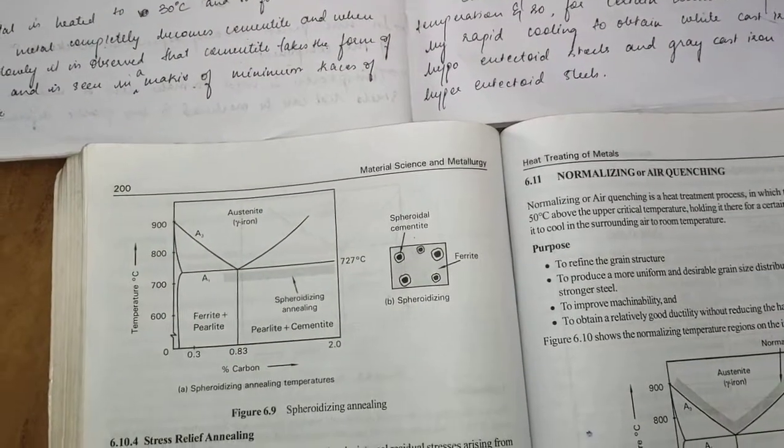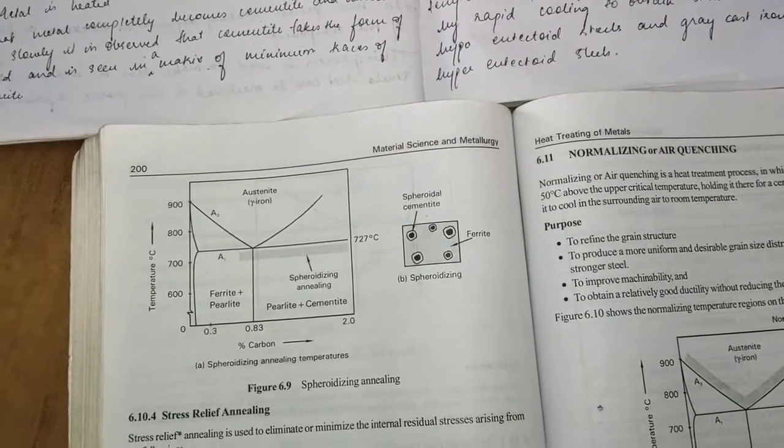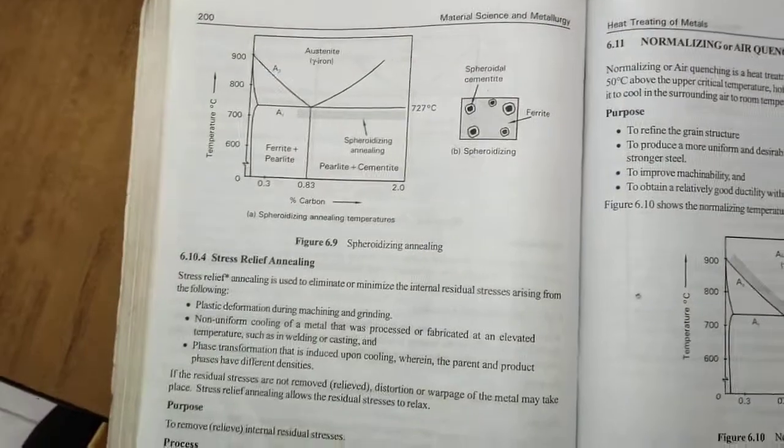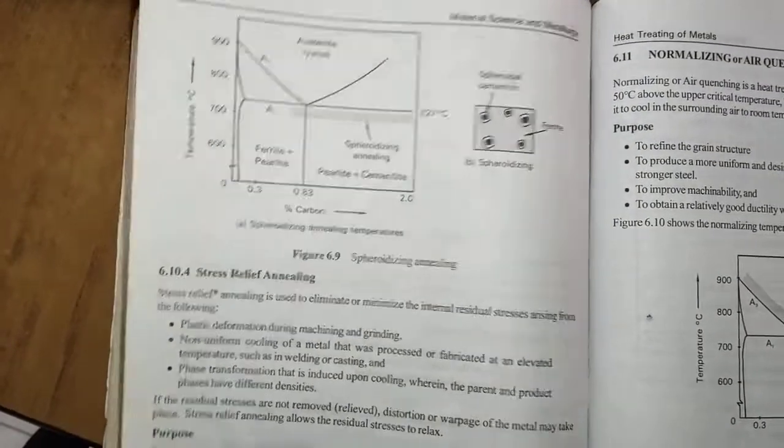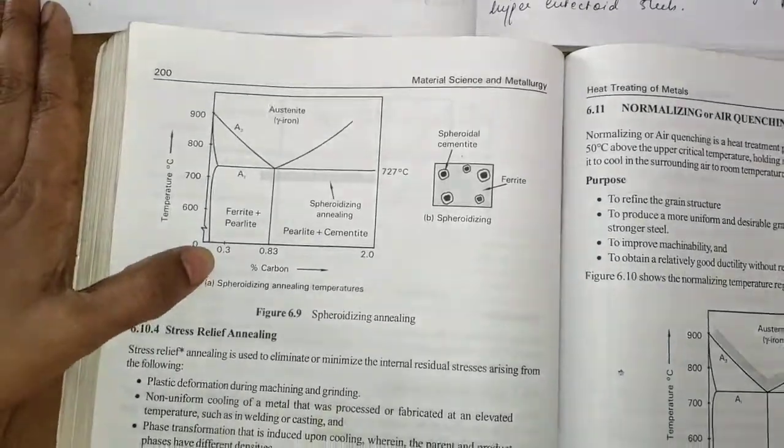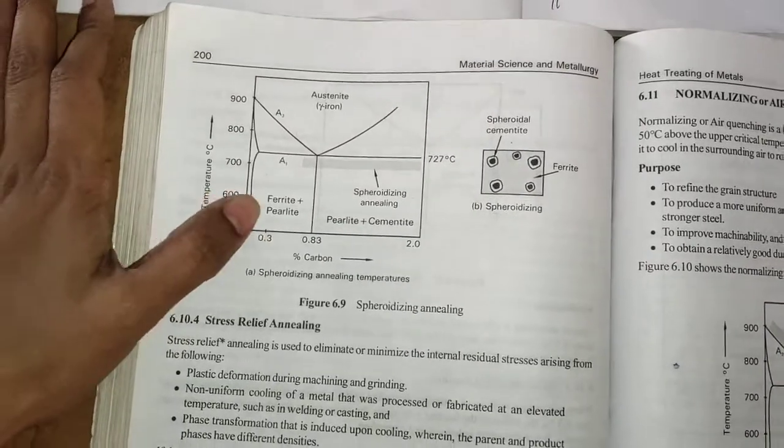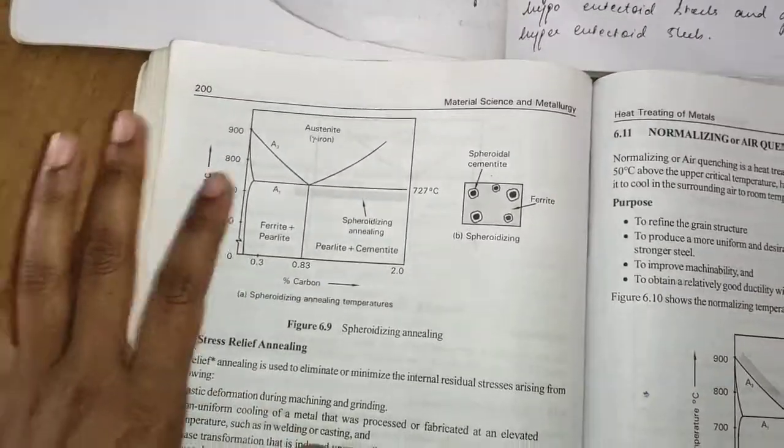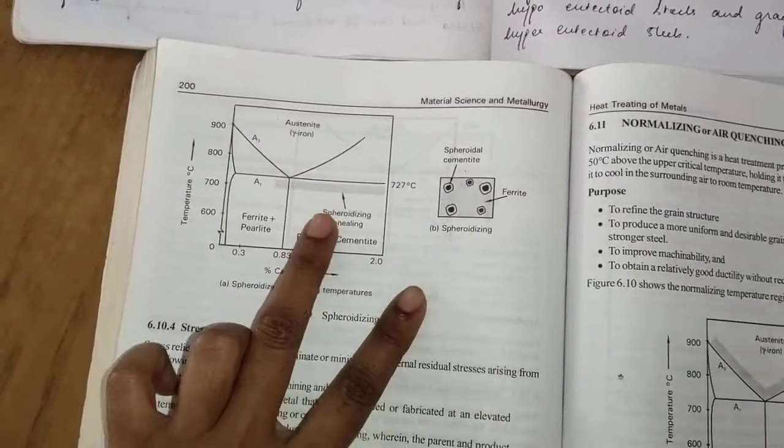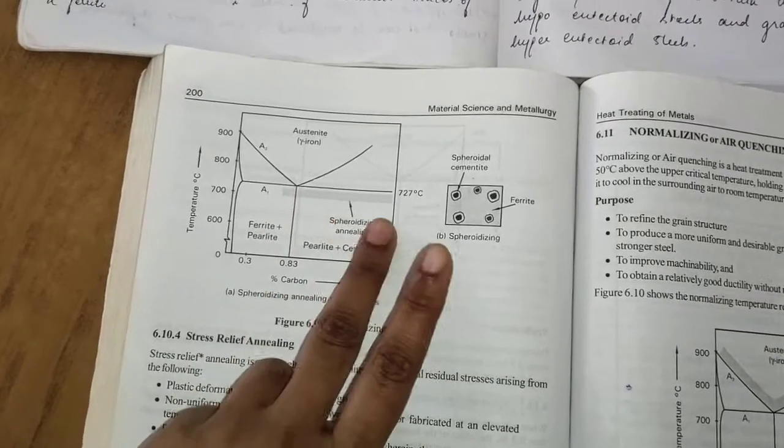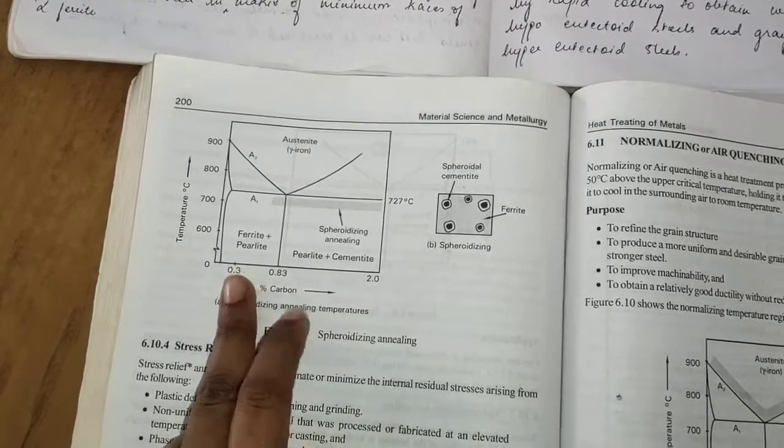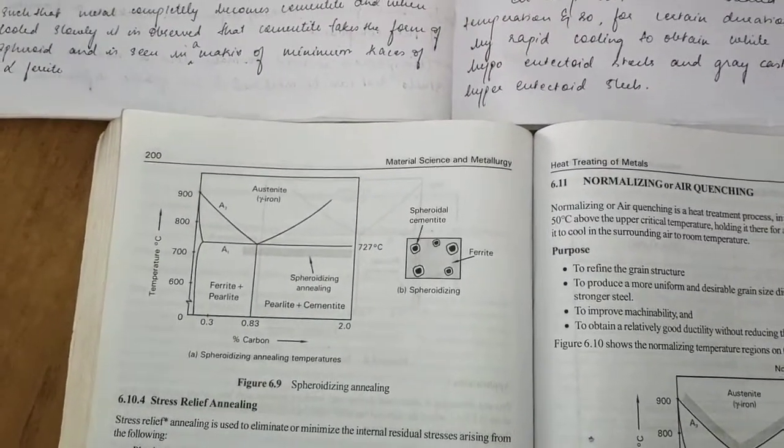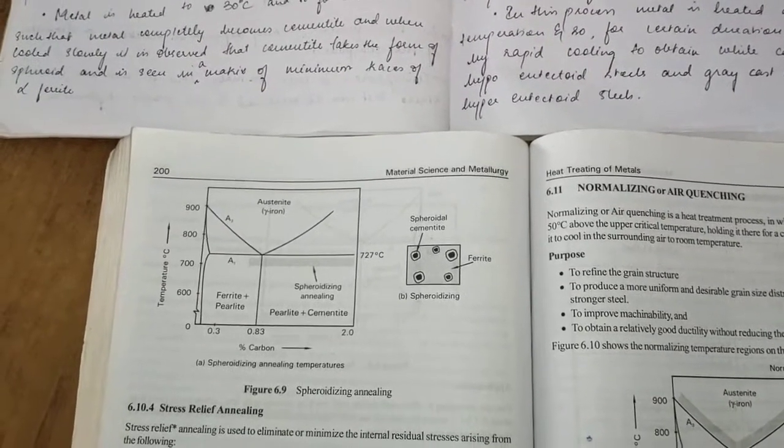Spheroidizing is a heat treatment process carried out on steels which have a carbon content—I should be specific about how much percentage of carbon—oh sorry, not less than, greater than 0.3 percent. That's why on the graph you can see 0.3, so spheroidizing annealing is on this line. It's done on carbon percentages more than 0.3 and up to 2 percent, because beyond 2 percent it is cast iron.